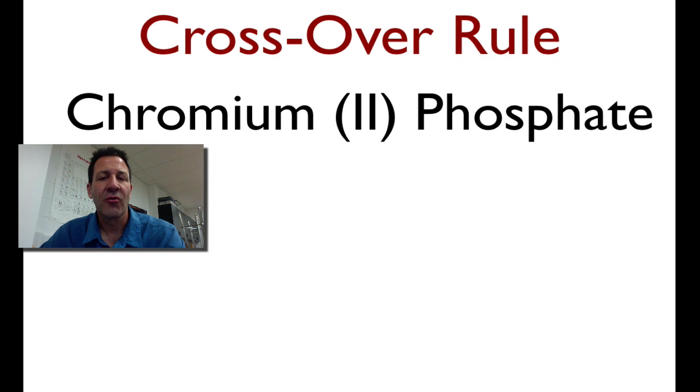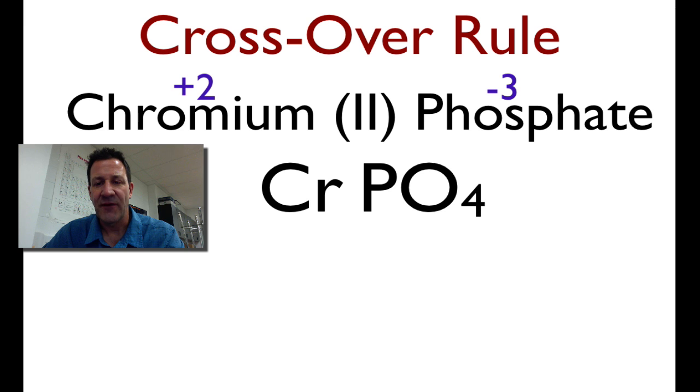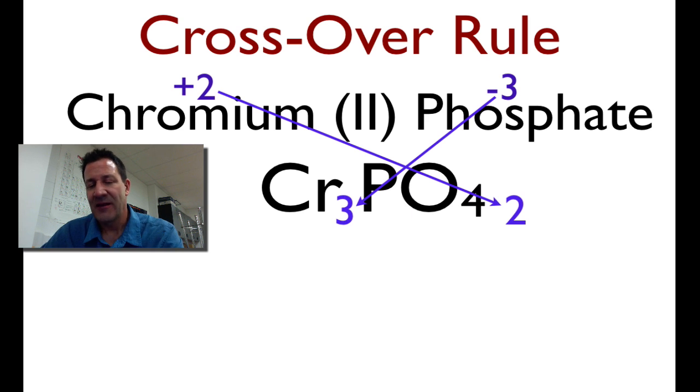One more. Chromium(II) phosphate. I'm going to do the same thing over again. These are all ionics. Chromium is plus 2. Phosphate is minus 3. I'm going to write down the chemical symbols for chromium and for phosphate. And I'm going to apply the crossover rule. I'm going to take the 2 from the chromium and put it on the phosphate. I'm going to take the 3 from the phosphate and put it on the chromium.